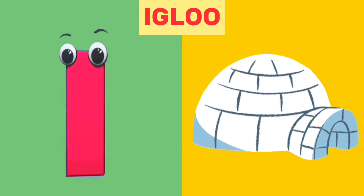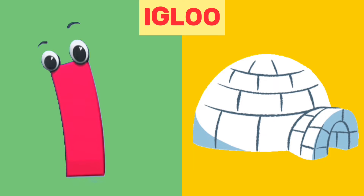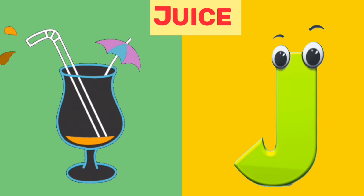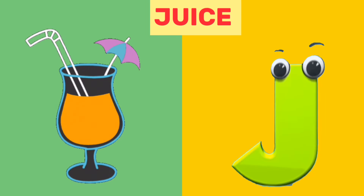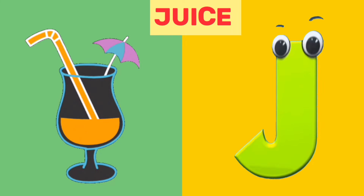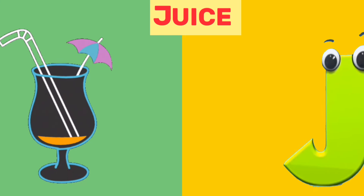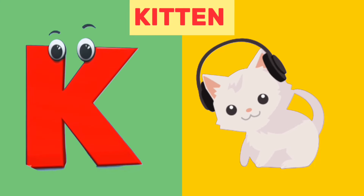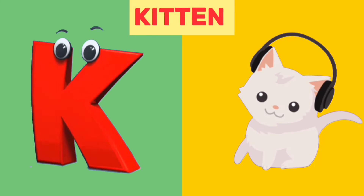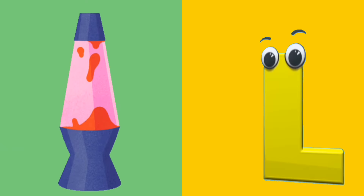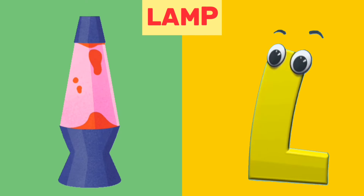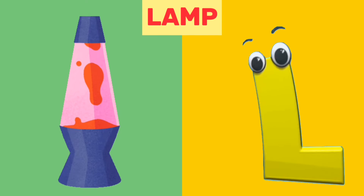I is for igloo. I, igloo. J is for juice. J, juice. K is for kitten. K, kitten. L is for lamp. L, lamp.